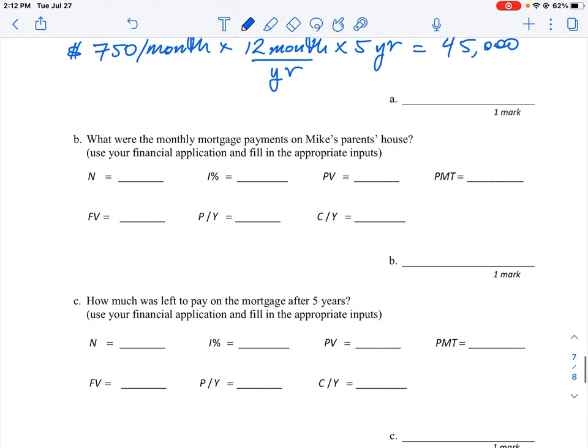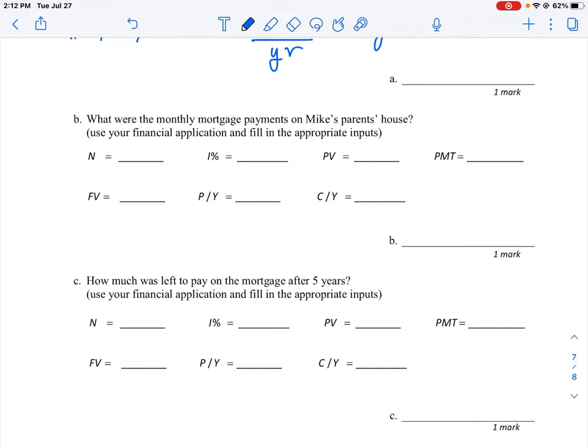For B, what we're doing here is Mike's parents are going to purchase a house, and so to do this question you are going to need your TVM solver. You need the calculator, either the emulator or the real calculator or you can use the web app. We're going to be looking at finding here the mortgage payments, the payment amount. What you do is you fill in the information for all the other blanks and then the one that you want to find is your question mark and then the calculator will go and solve that for you.